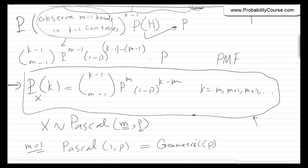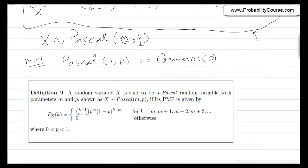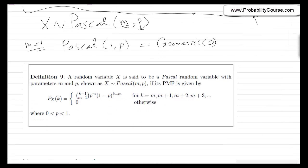So if I want to provide a formal definition for Pascal: a random variable x is said to be a Pascal random variable with parameters m and p if its PMF is given by this distribution.